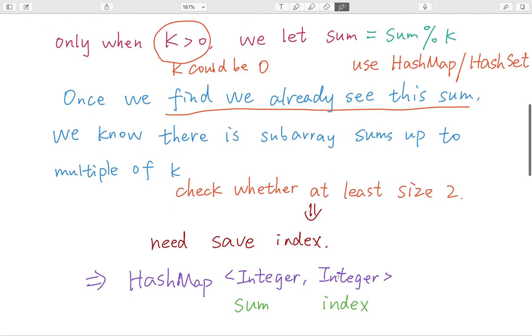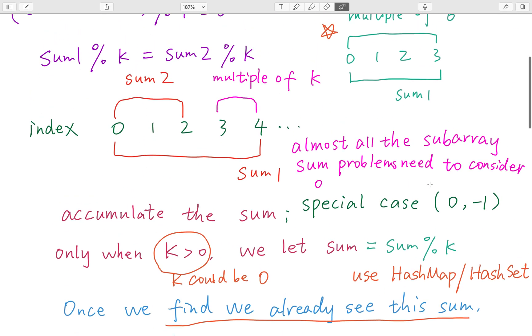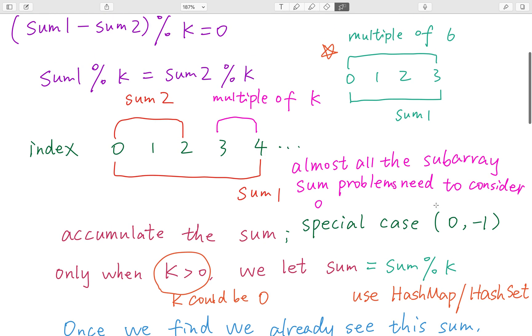In the end, we'll use a hash map where the key is sum modulo k and the value is the index. For zero, we should first put zero maps to negative one. If the current index is three and we do three minus negative one, we get four—that's exactly the size of the subarray.